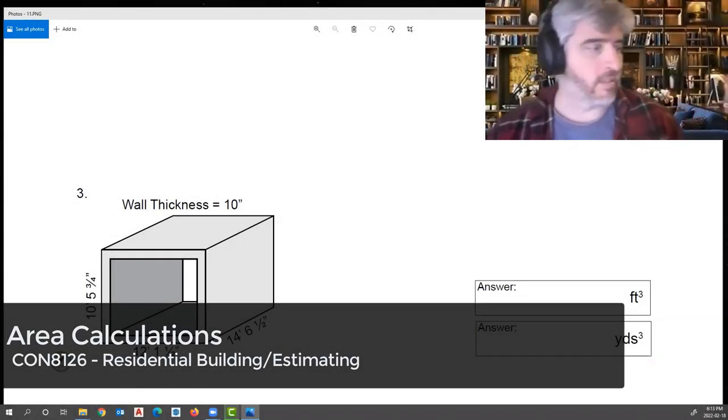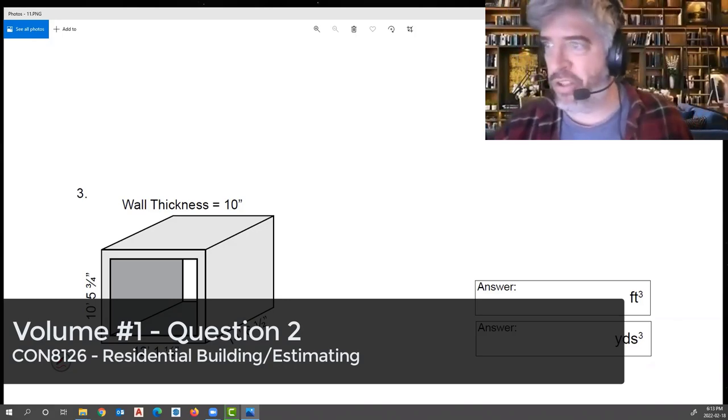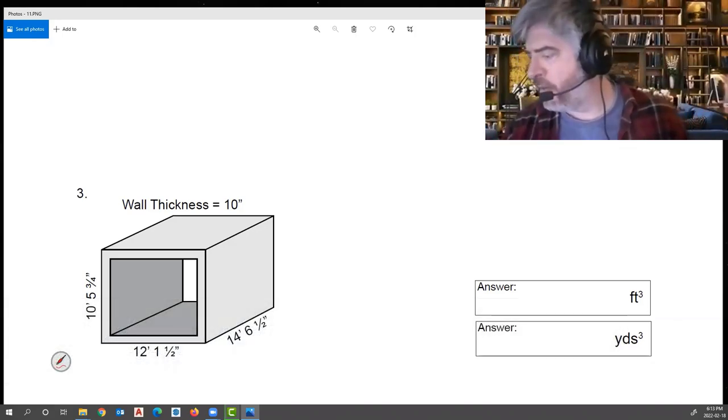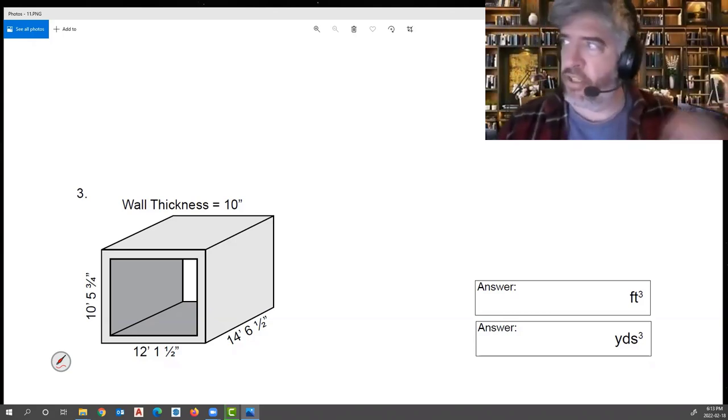All right, welcome to almost the last one for our perimeter area and volume sheets. This one here is volume number three. Tripped a few people up on this one. I'm going to show you the two basic ways we calculate this. I'll do the same thing for the third option there as well.